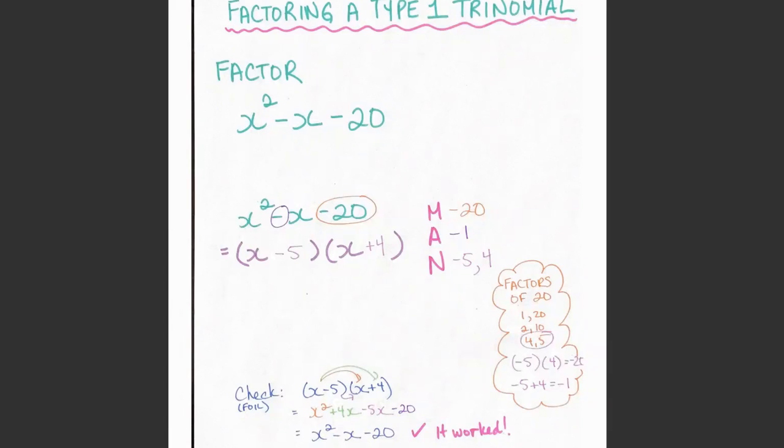First of all, how can you tell if it is a Type 1 trinomial? The example that we'll look at right here is x² - x - 20.